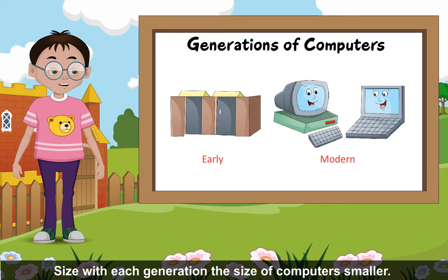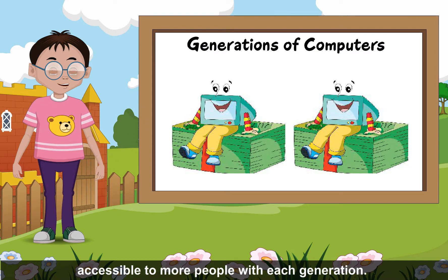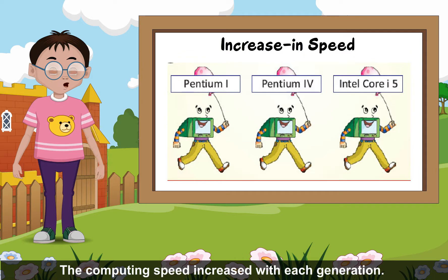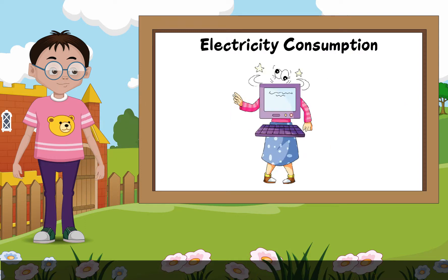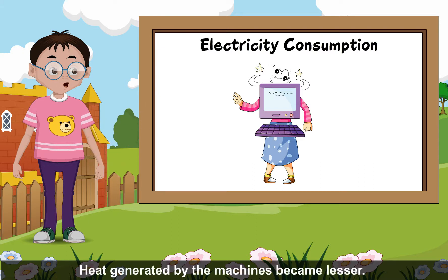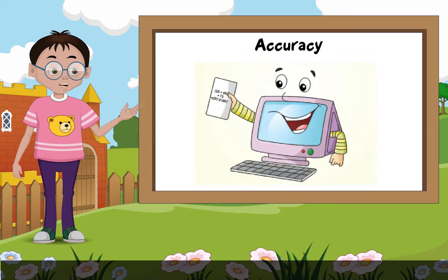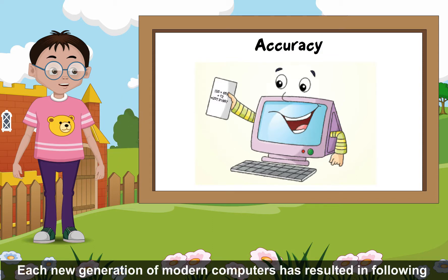With each generation, the size of computers became smaller. Computers became cheaper and hence accessible to more people. The computing speed increased with each generation. Computer memory increased with every generation. Heat generated by the machines became lesser, and they consumed less electricity. With each generation, computers became more and more error-free.